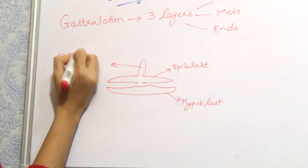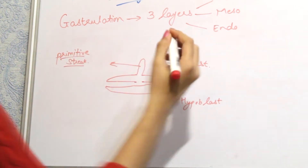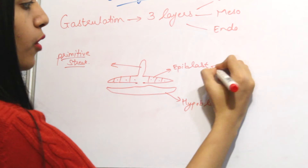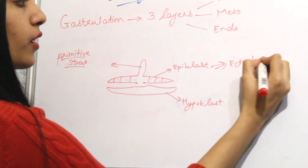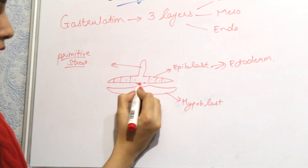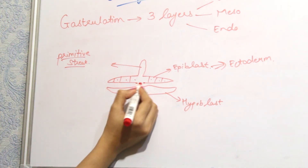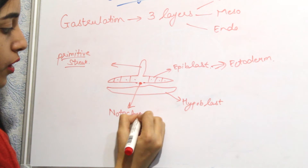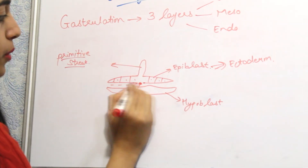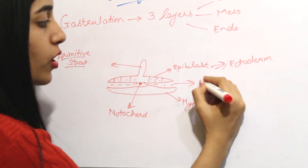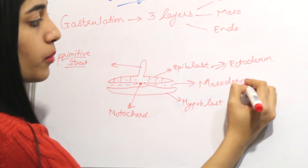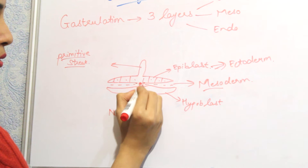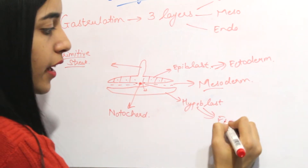The cells in the epiblast will form the ectoderm layer. When epiblast cells migrate to the center — between the epiblast and hypoblast — they form the notochord. When epiblast cells move into the space between the hypoblast and epiblast they become mesoderm (meso meaning middle). When epiblast cells migrate into the hypoblast, they form the endoderm layer.